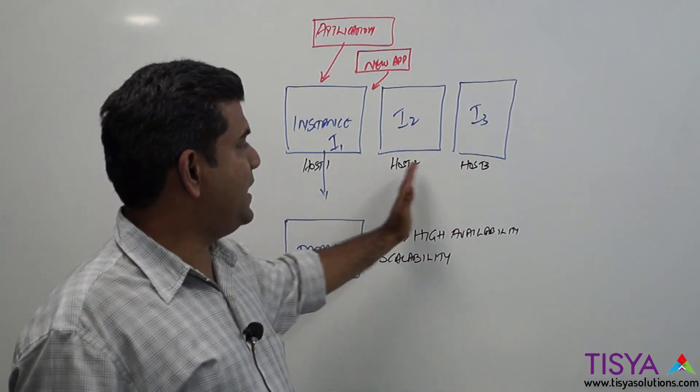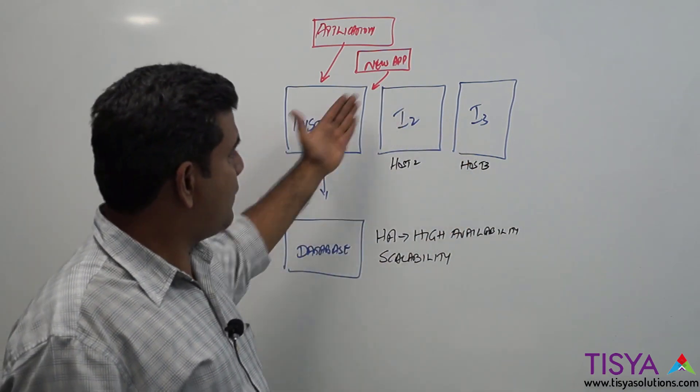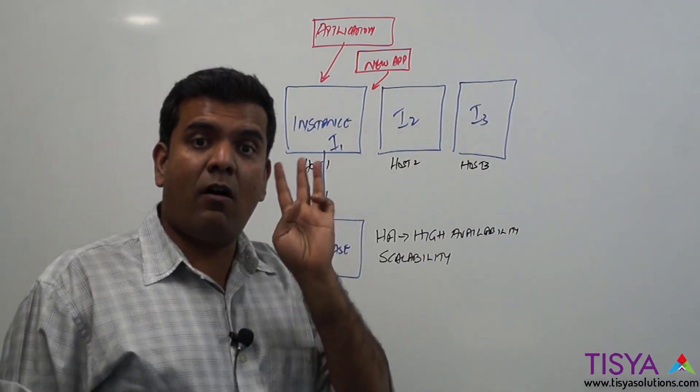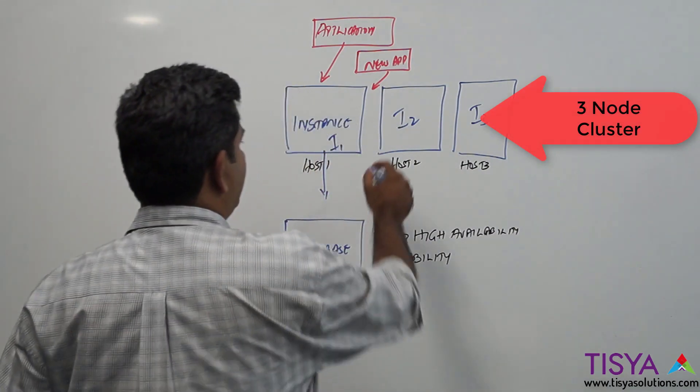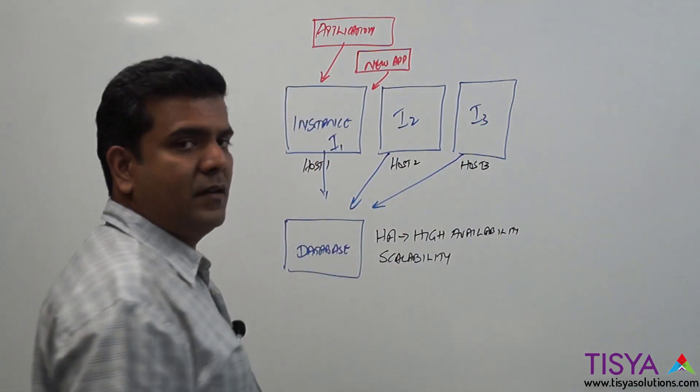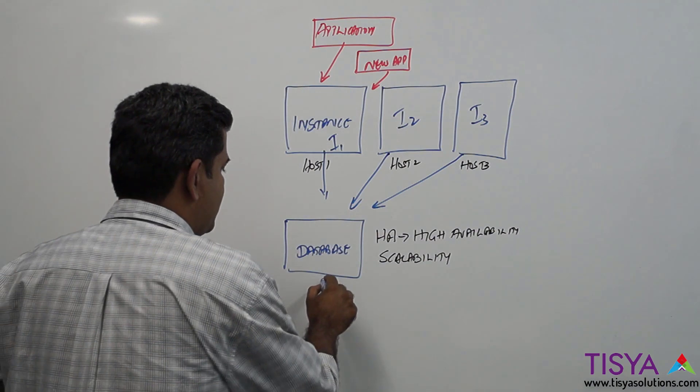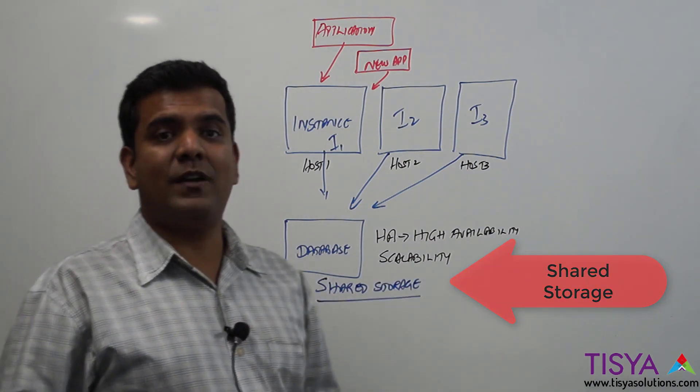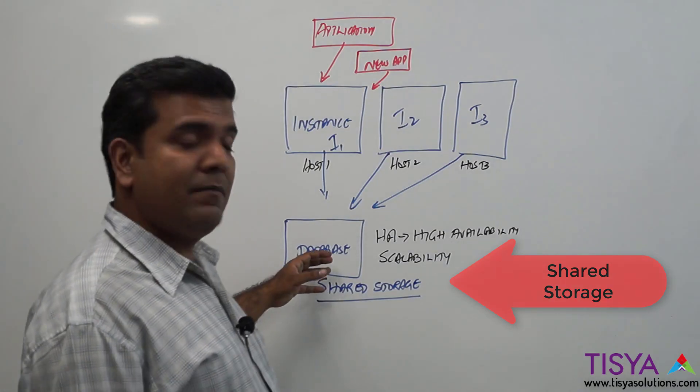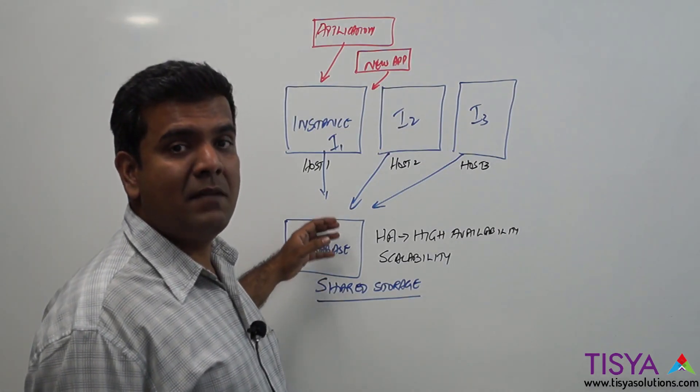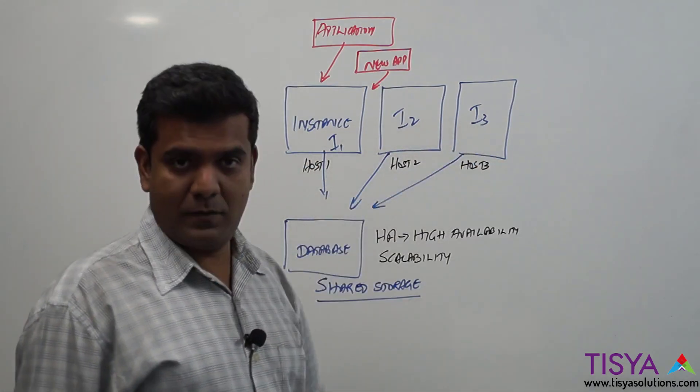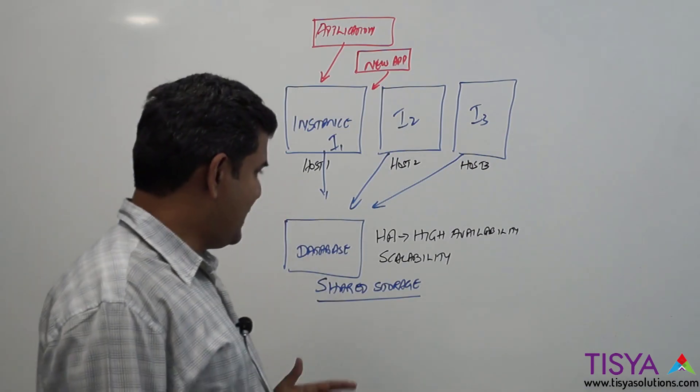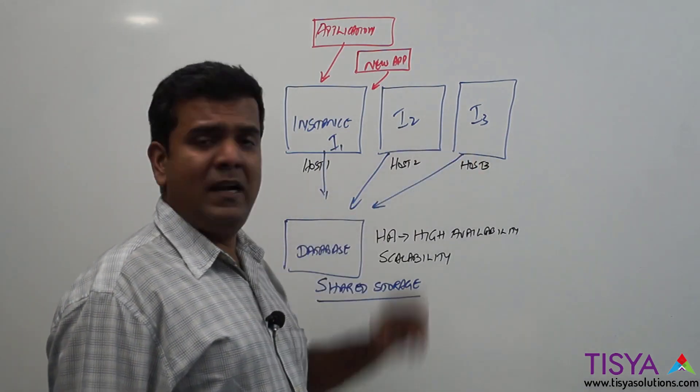All three instances would have to connect to the same database. So the database has to be kept in a shared storage—a storage area where files can be manipulated or accessed simultaneously by multiple hosts. Now this ability to have multiple instances results in high availability.